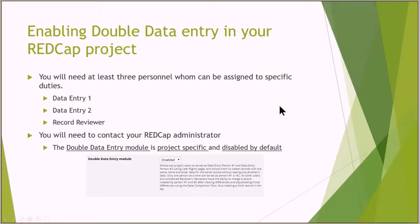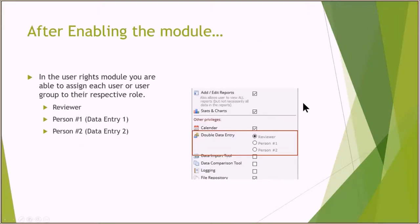After you enable the module, in the user rights page you're able to assign each user or group of users to the respective role. Those roles are, as mentioned before, reviewer, and person one and person two, which refer to data entry one and data entry number two.